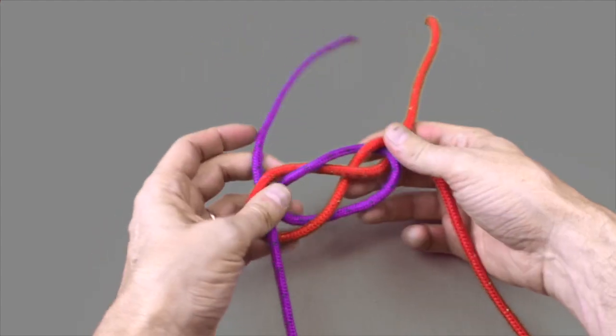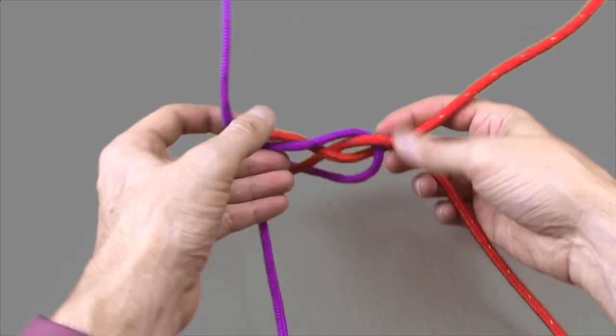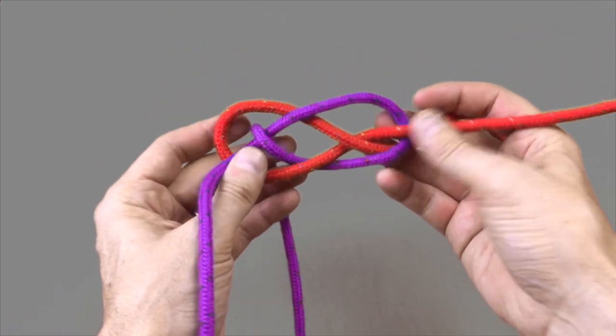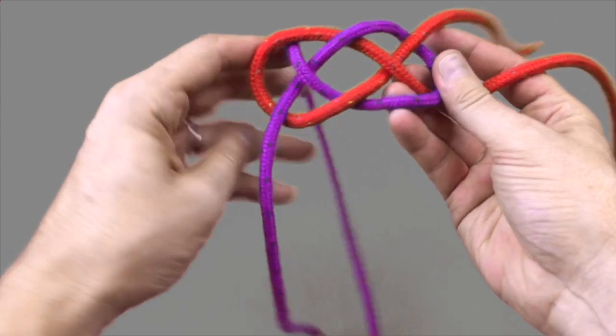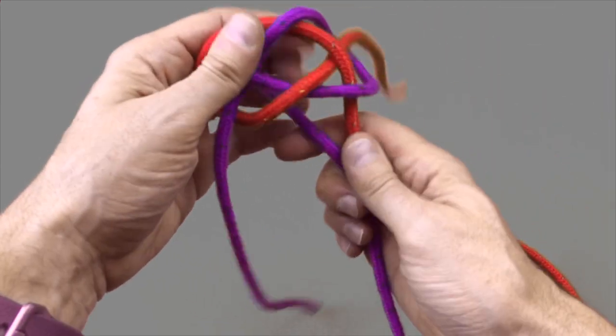This completes phase one of the knot. Now what you want to do is flip the knot upside down and pull the two longer tails together down into the center.